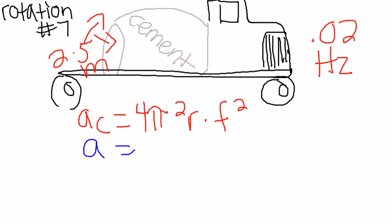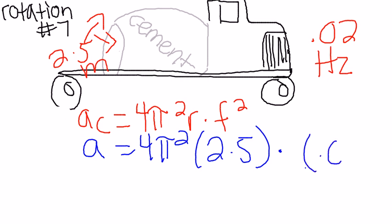And our acceleration equals 4 pi squared times the 2.5 as a radius times the frequency, which is 0.02 squared. And our answer for acceleration should be 0.039 meters per second squared.